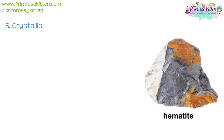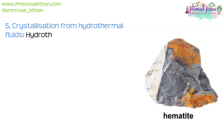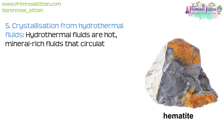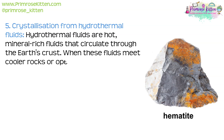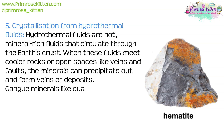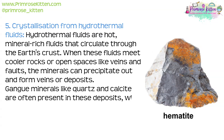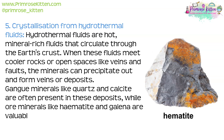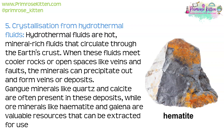Number 5: crystallisation from hydrothermal fluids. Hydrothermal fluids are hot, mineral-rich fluids that circulate through the Earth's crust. When these fluids meet cooler rocks or open spaces like veins and faults, the minerals can precipitate out and form veins or deposits. Gangue minerals like quartz and calcite are often present in these deposits, while ore minerals like hematite and galena are valuable resources that can be extracted for use in industry.